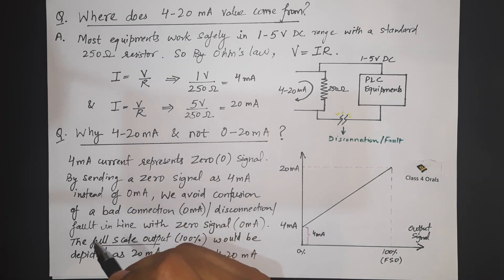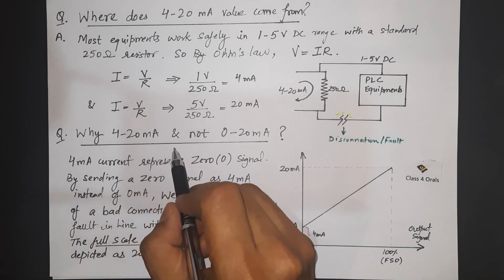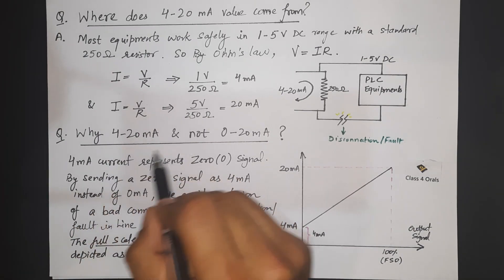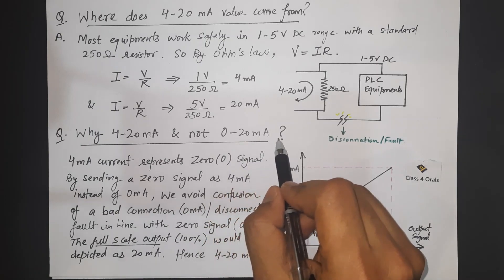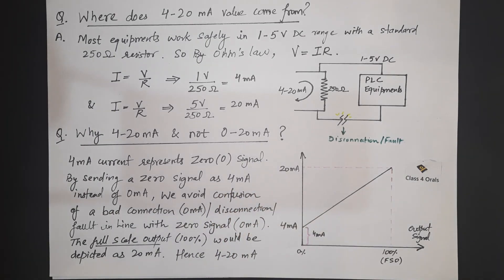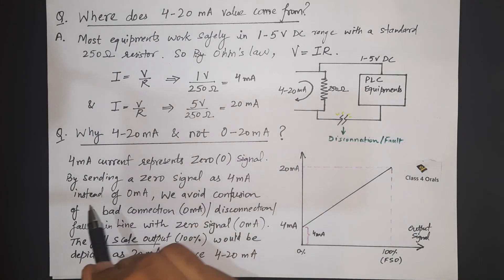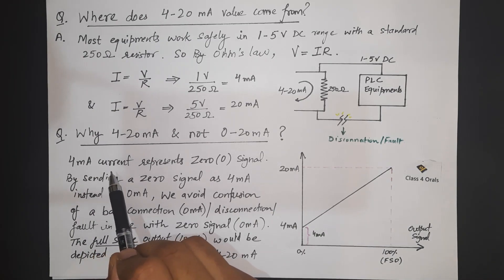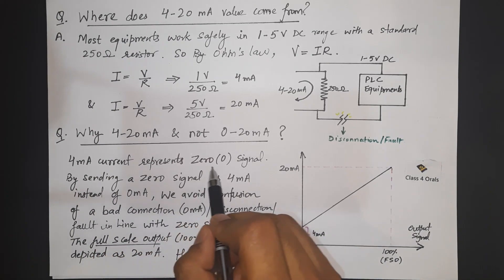Now, the question comes why the 4 to 20 mA is used and not 0 to 20 mA.